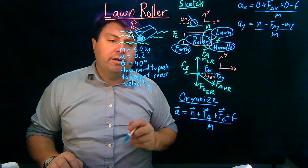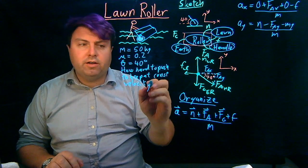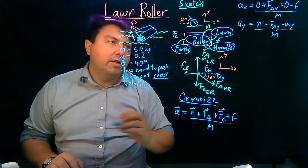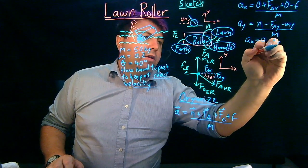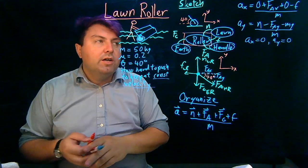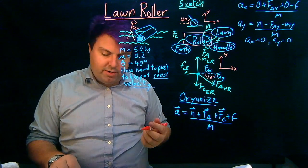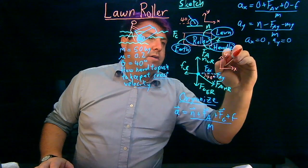And next we have our acceleration constraints. Well, we're told it's a constant velocity. So we know that a_x is zero and we know that a_y is zero. So we can then set them equal to zero. And that takes us to our solve step.